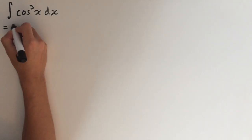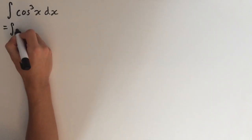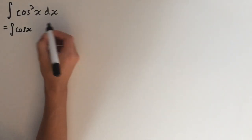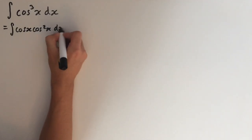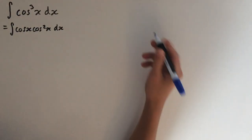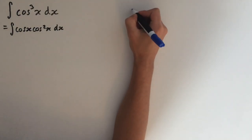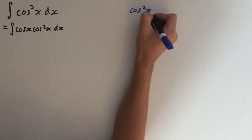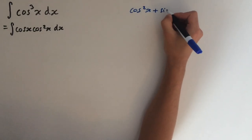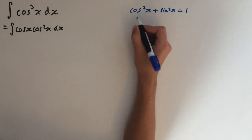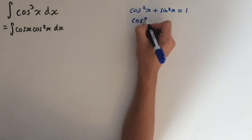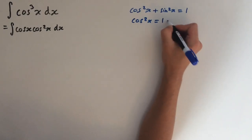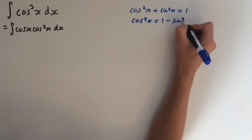We can write this integral as the integral of cos of x times cos squared of x dx. Now let's look at the identity cos squared of x plus sin squared of x equals 1, and rearrange for cos squared of x. This gives us 1 minus sin squared of x.